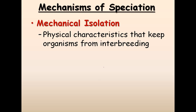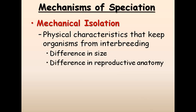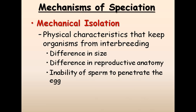Mechanical isolation involves physical characteristics that prevent interbreeding — for example, some animals have sex organs that cannot be utilized when mating with another species, due to differences in size of sex organs or reproductive anatomy. Another important concept is the inability of sperm to penetrate the egg: even if everything else is compatible, if the sperm cannot penetrate the egg, no zygote forms, no offspring results, and those organisms cannot reproduce with each other.